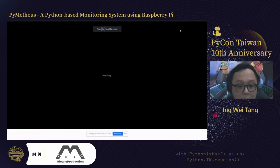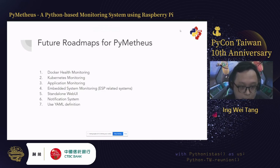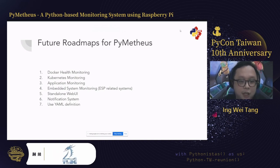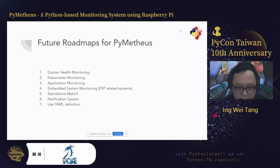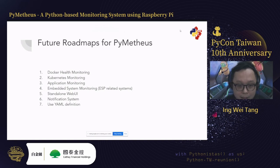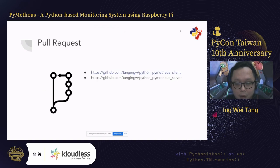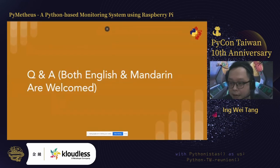That ends the demonstration. For the future roadmap, Docker and Kubernetes support are planned. Most importantly, I'm interested in implementing YAML configuration because some current features are still a bit cumbersome. I previously started a YAML branch but haven't finished it due to other commitments. You can check my GitHub repo and submit a pull request if you're interested. Questions are welcome in English or Mandarin.